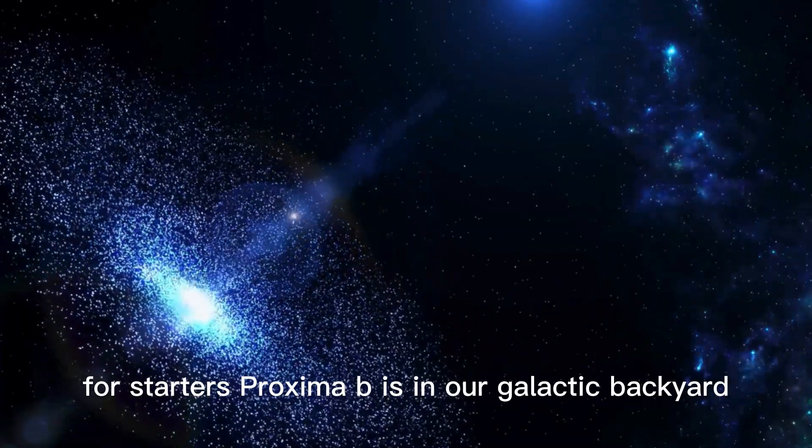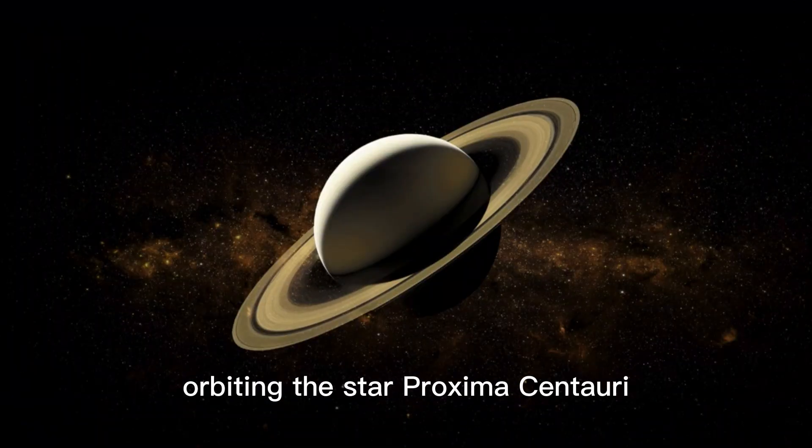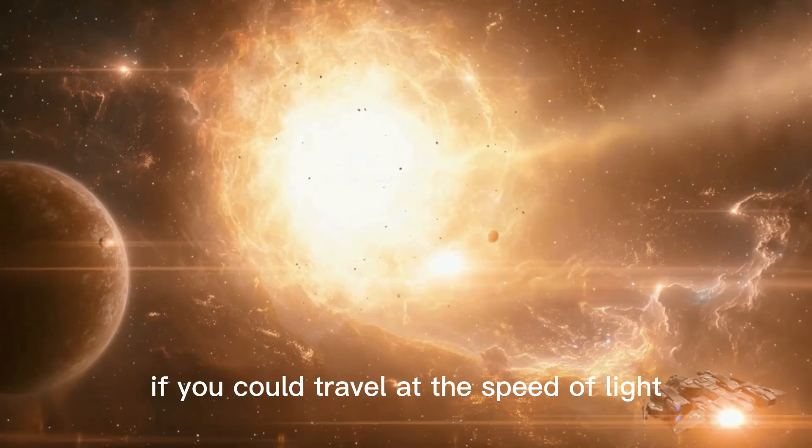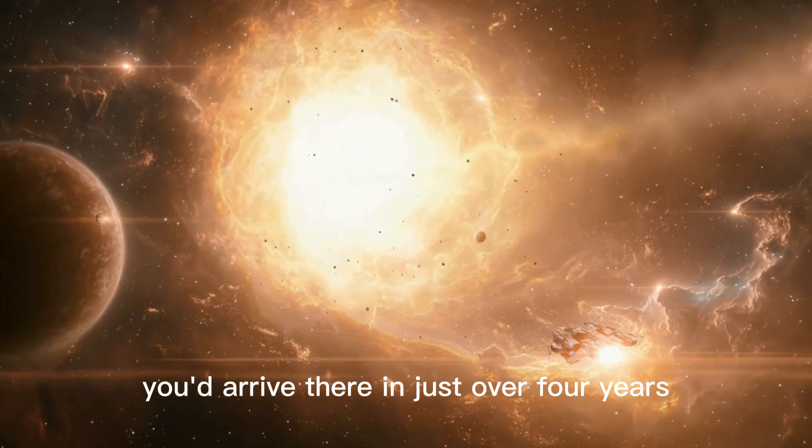For starters, Proxima b is in our galactic backyard, orbiting the star Proxima Centauri just 4.2 light years from Earth. To put that into perspective, if you could travel at the speed of light, you'd arrive there in just over four years.